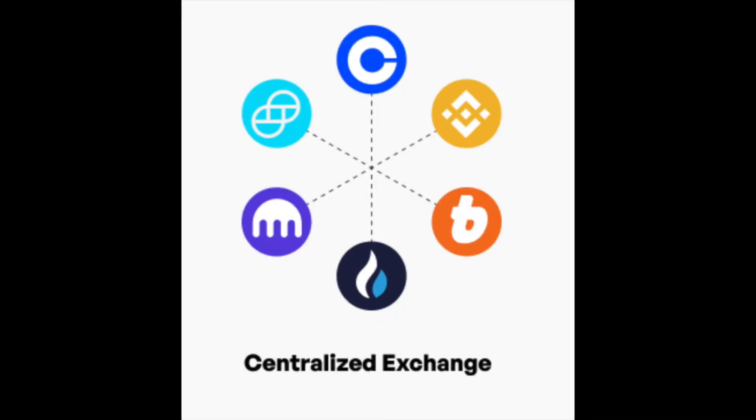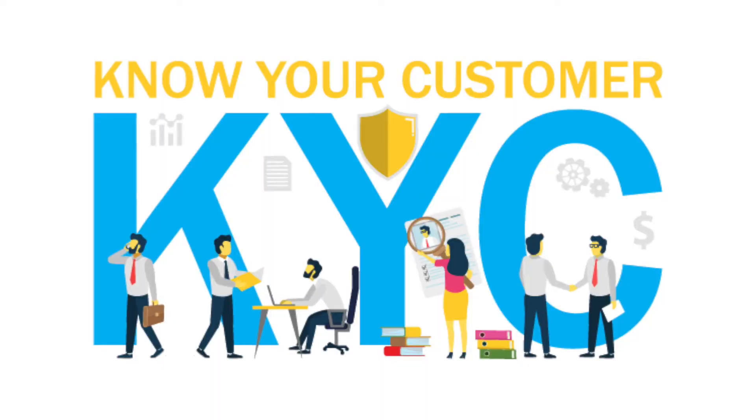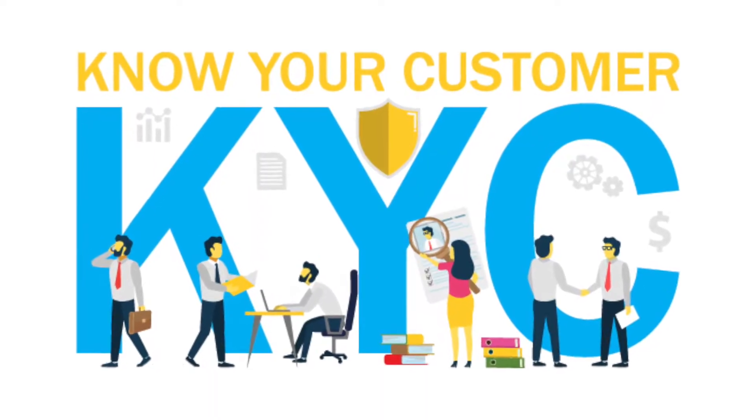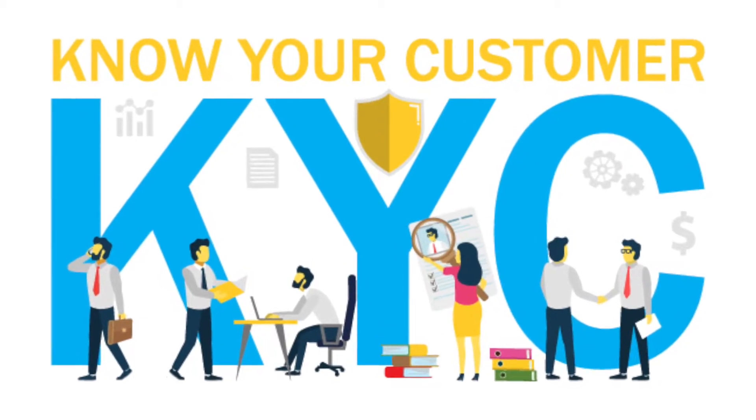Now let's talk about how to get crypto. There are a few different ways. The most popular fiat on-ramps are centralized exchanges like Binance, Coinbase, Kraken, and even Robinhood now. This obviously differs by country residence and requires KYC, or know your customer.